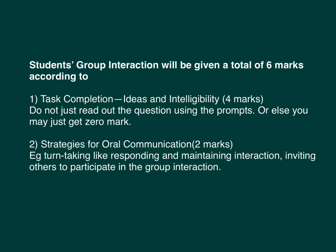For the group interaction, here is how the 6 marks are awarded. First, 4 marks go to Task Completion — this means how well you express your opinion and whether your ideas are well-considered. Do not simply read a question aloud, as that earns no marks. The remaining marks are for oral communication skills: the examiner looks at whether students take turns, maintain the conversation without dead air, and whether they invite quieter students to participate.